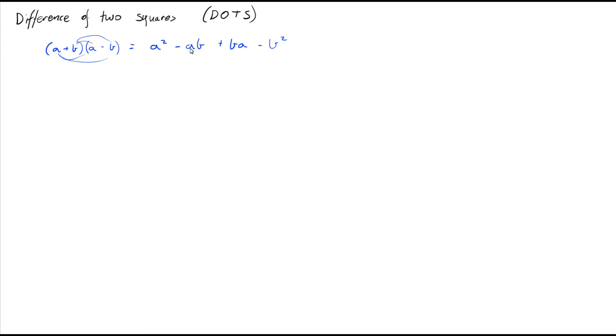In the middle we've got ab and ba - they're essentially the same term. So if we've got -ab plus ab, they actually cancel each other out. So this plus that equals zero, and we've got a² - b². This is what happens when we expand the difference of two squares.